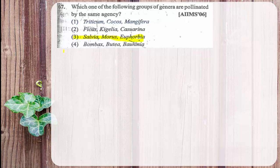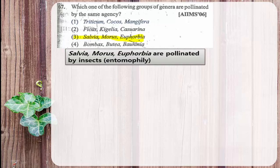Salvia, Morus, and Euphorbia — in all these, the type of pollination is entomophily. Entomophily means pollination is carried out by insects. Other terms include anemophily for wind pollination, hydrophily for water pollination, and chiropterophily for bat pollination. In Salvia, Morus, and Euphorbia, the pollinating agent is the insect, so it is called entomophily.